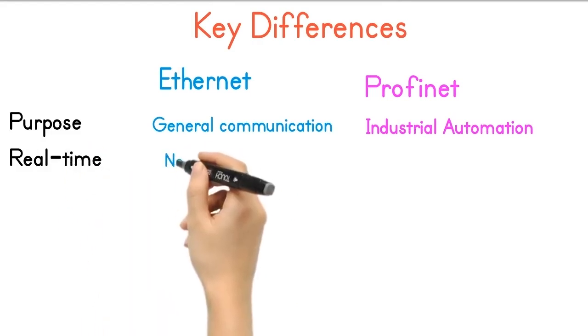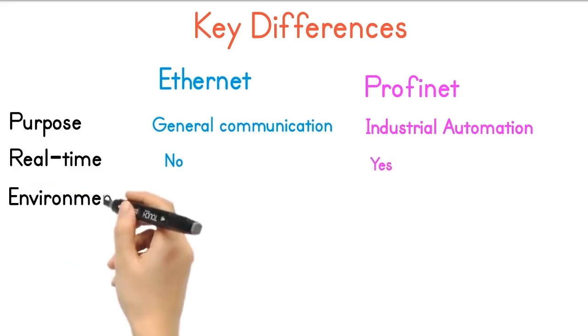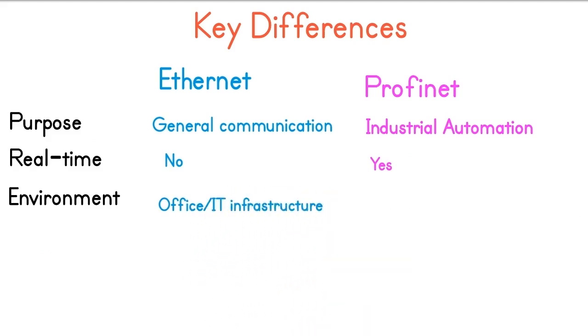Real-time: Ethernet has no real-time capabilities, while Profinet provides real-time communication. Environment: Ethernet is suitable for office or IT infrastructure, while Profinet is suitable for harsh industrial environments.